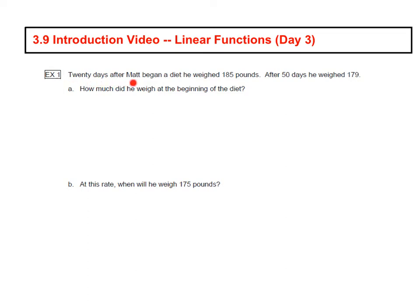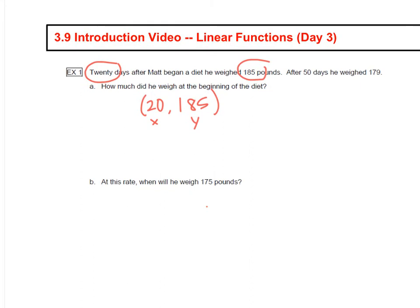So 20 days after Matt began a diet, he weighed 185 pounds. After 50 days, he weighed 179 pounds. So we have 20 days after he started, Matt weighed 185 pounds. I'm going to make an ordered pair out of that: 20 and 185. And then I want to think about what the X and the Y are each representing. So X is 20 days, so we're going to say number of days. And then our Y, that 185, that's his weight in pounds.